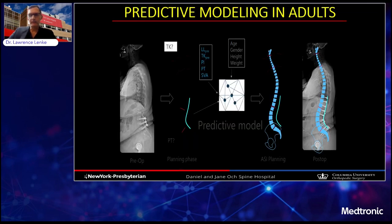The predictive modeling is a really unique feature of this platform. When you correct the instrumented and fused region of the spine, this technology will predict what's going to happen to the unfused area, especially above in the thoracic region. This is obviously very important to try and minimize adjacent segment disease, and specifically PJK and PJF, which are still very common problems associated with spinal reconstructive surgery, especially when instrumentation and fusion extends to the sacrum and pelvis.